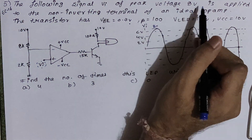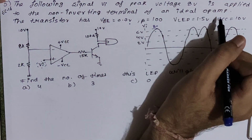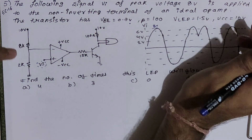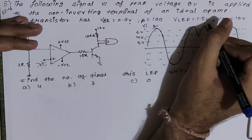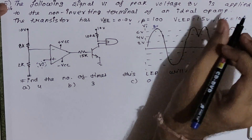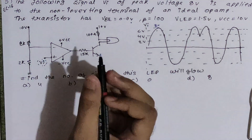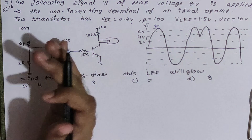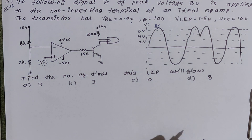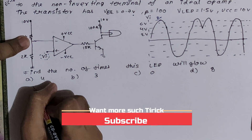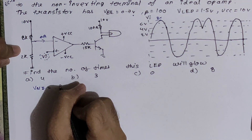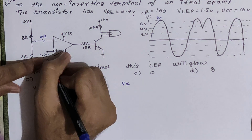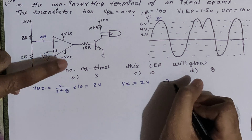The next problem: a signal Vi with peak voltage 8V is applied to the non-inverting terminal of an ideal op-amp. Given: Vbe = 0.7V, Vled = 1.5V (minimum for LED to be on), Vcc = 10V. We have to find the number of times the LED glows. Since the op-amp has no feedback, it acts as a comparator. Using voltage divider, the reference voltage Vni = (2/(2+8)) × 10 = 2V.